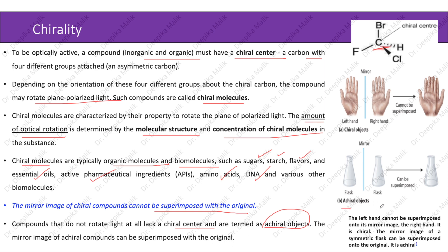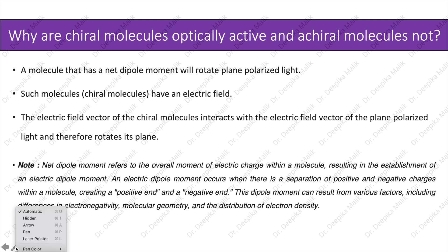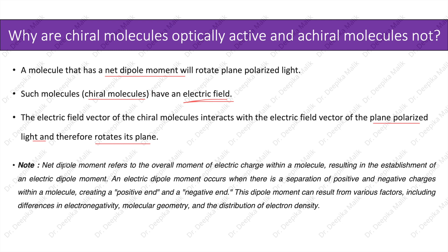Why are chiral molecules optically active and achiral molecules not? A molecule that has a net dipole moment will rotate plane polarized light. Chiral molecules have an electric field; the electric field vector of the chiral molecule interacts with the electric field vector of the plane polarized light and therefore rotates its plane. Net dipole moment refers to the overall moment of electric charge within a molecule, resulting from a separation of positive and negative charges. This can result from differences in electronegativity, molecular geometry, and distribution of electron density.